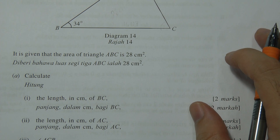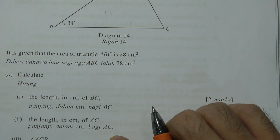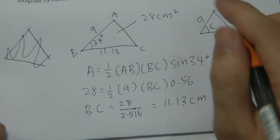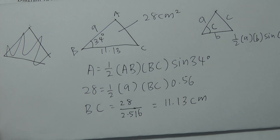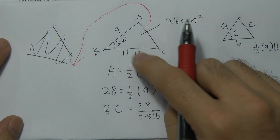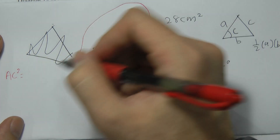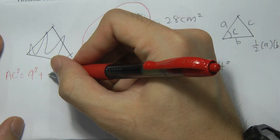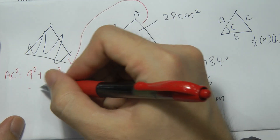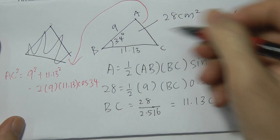For part B, they ask you to find the length AC. So we apply another formula. To get the length AC, we use the cosine rule: AC² = AB² + BC² = 9² + 11.13², and then minus 2 × AB × BC × cos(angle).